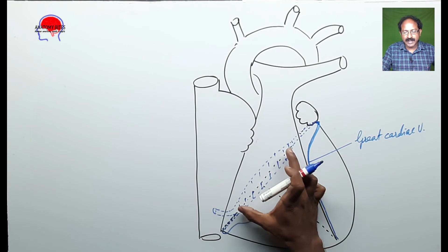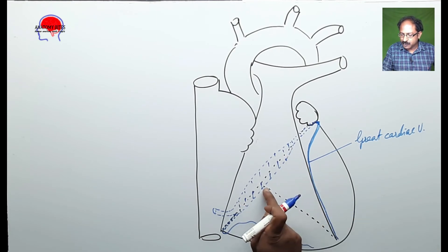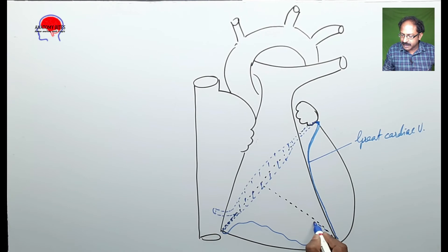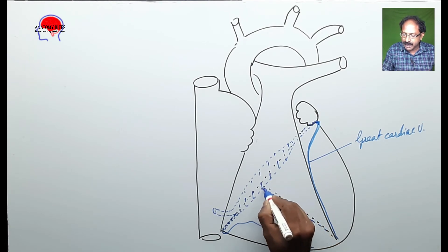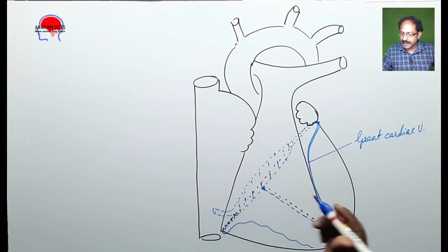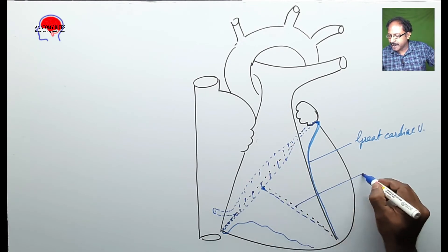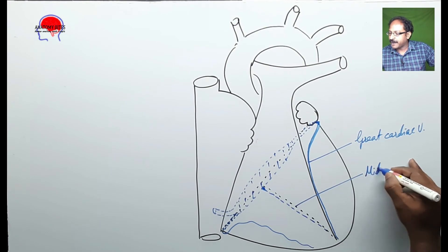There is a vein running from the posterior interventricular groove upwards and ending in the middle part of the coronary sinus. Hence, this vein is named as the middle cardiac vein.